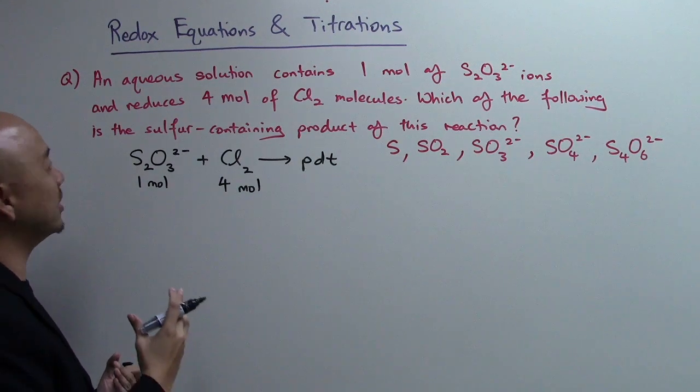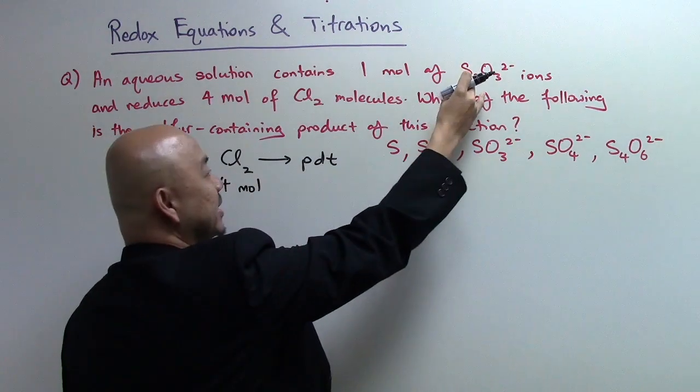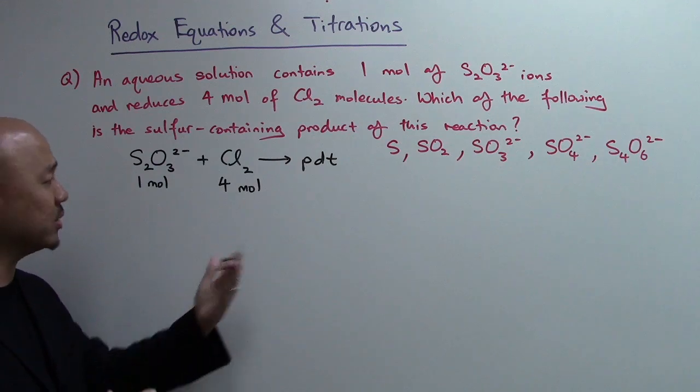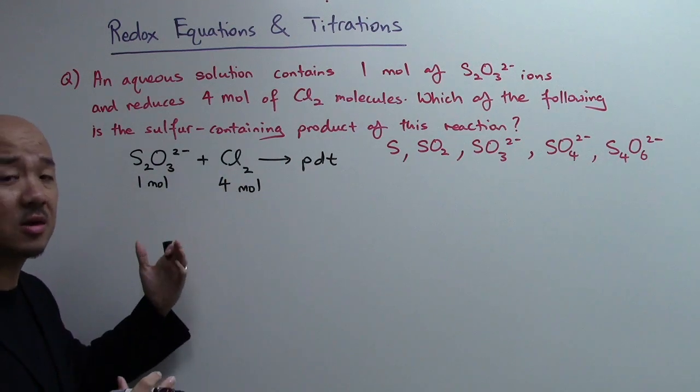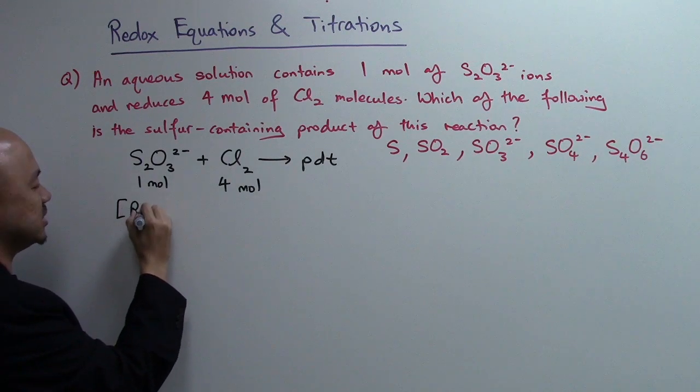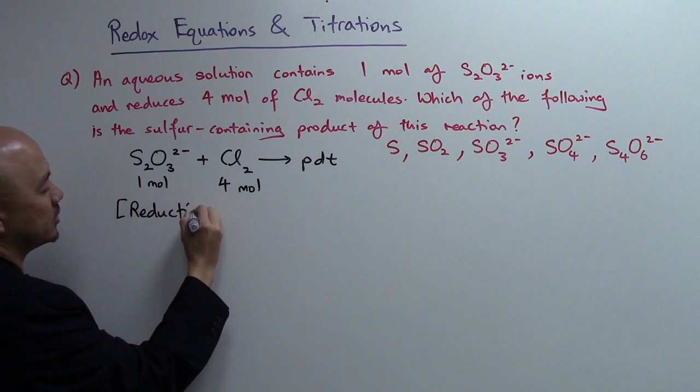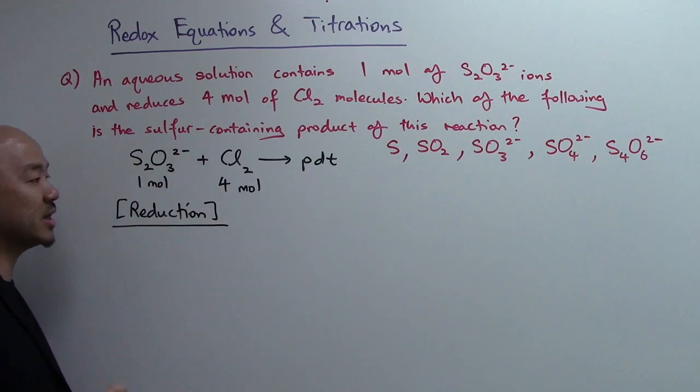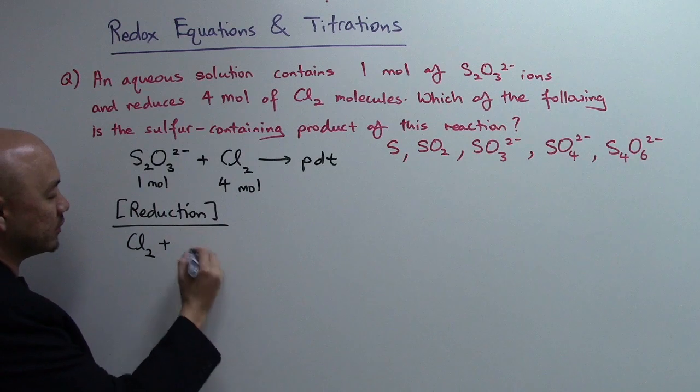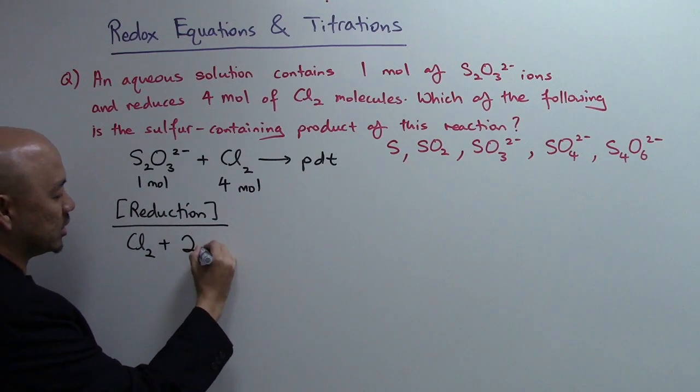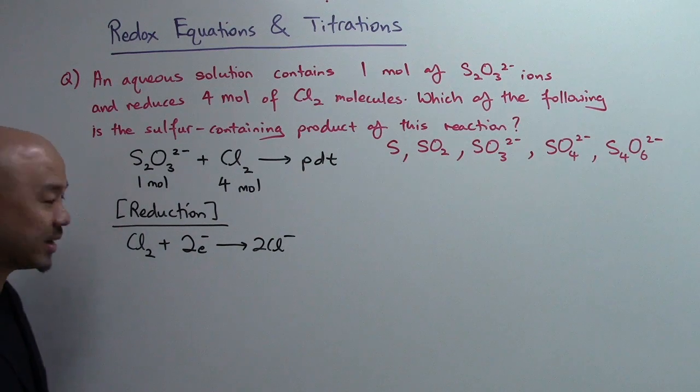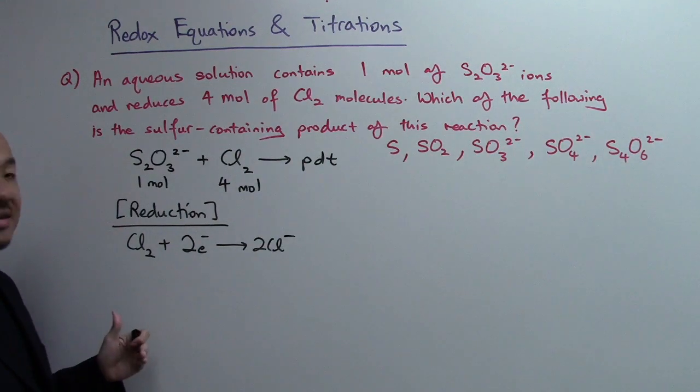You realize the one that they want you to find is the sulfur-based product. We're going to solve it later. We're going to look at the other side, which is chlorine, because we know chlorine very well. So chlorine gets reduced. This is the reduction half. Chlorine - one mole of it takes two moles of electrons to form two chloride ions. That's how chlorine gets reduced.